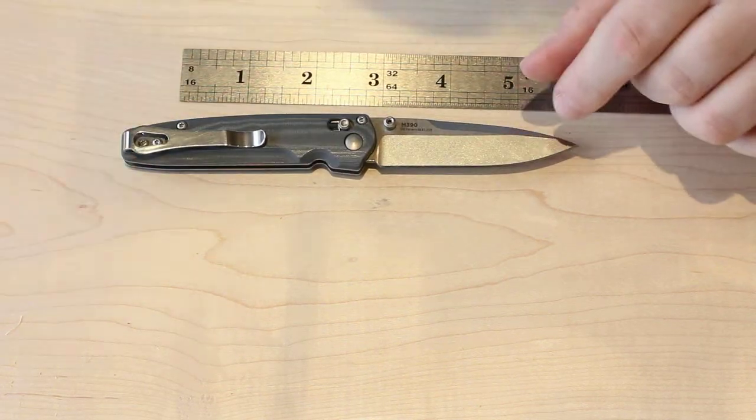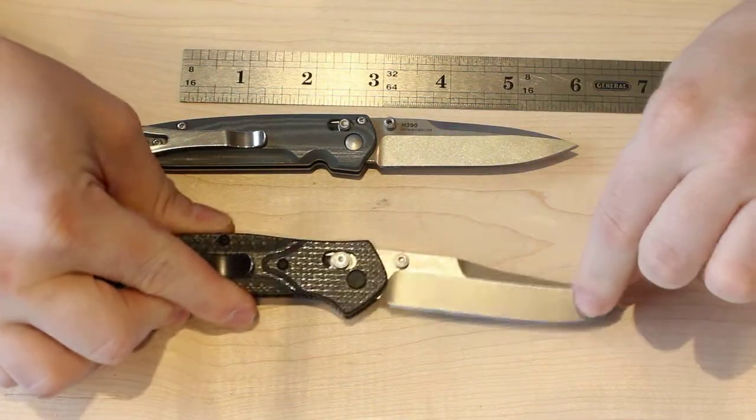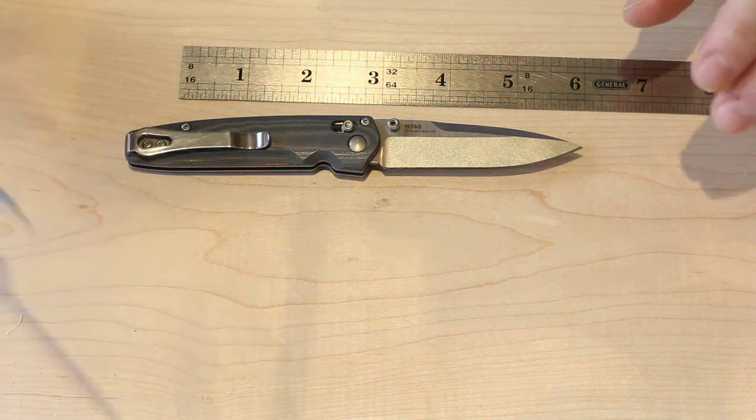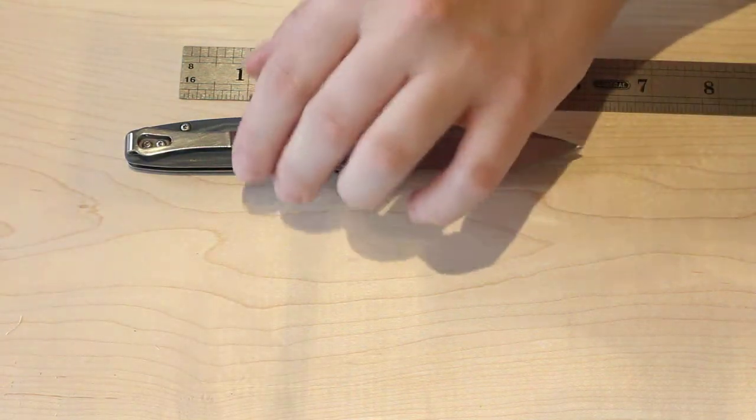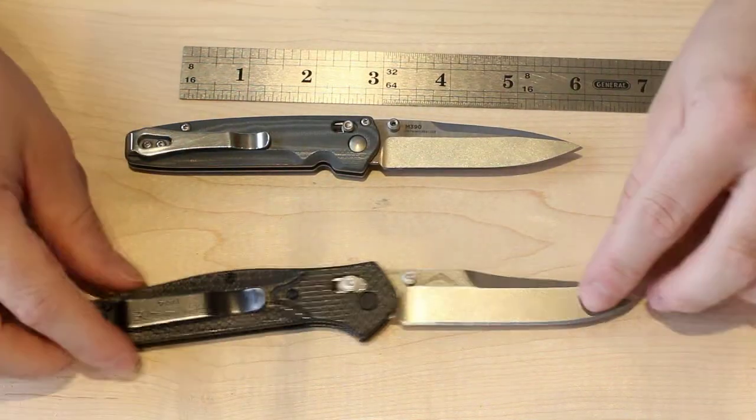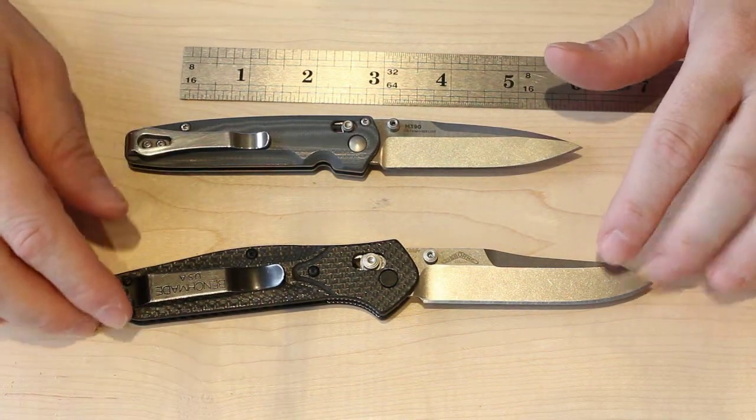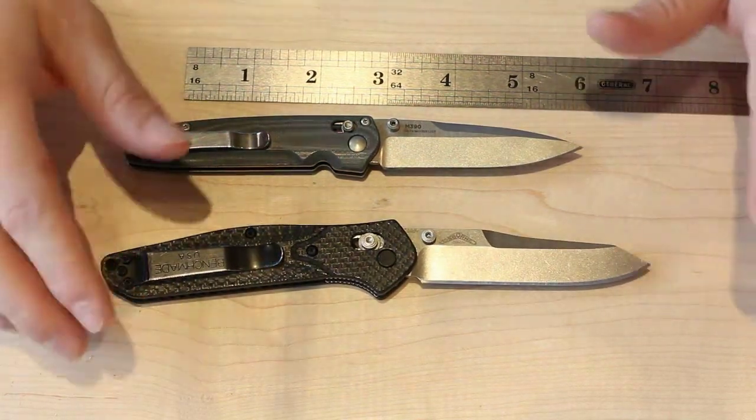When I go to San Francisco, I do not carry my 940-1 there. I carry my Benchmade Valet and I like it a lot. This is going to be mostly a Valet review, but also a comparison with the 940, which I had reviewed in a previous video.